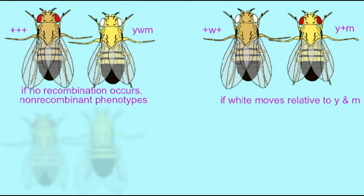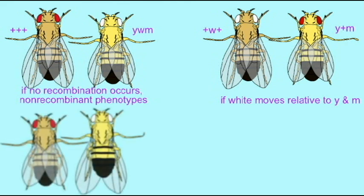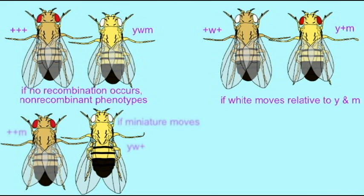If crossing over separates the yellow gene from the other two, then there will be flies which have a yellow body but that is their only mutant phenotype — they would be wild type for brick red eyes and normal length wings. However, there would be flies which have both white eyes and miniature wings but do not have a yellow body. These two phenotypes would result if yellow moves relative to the other two genes.